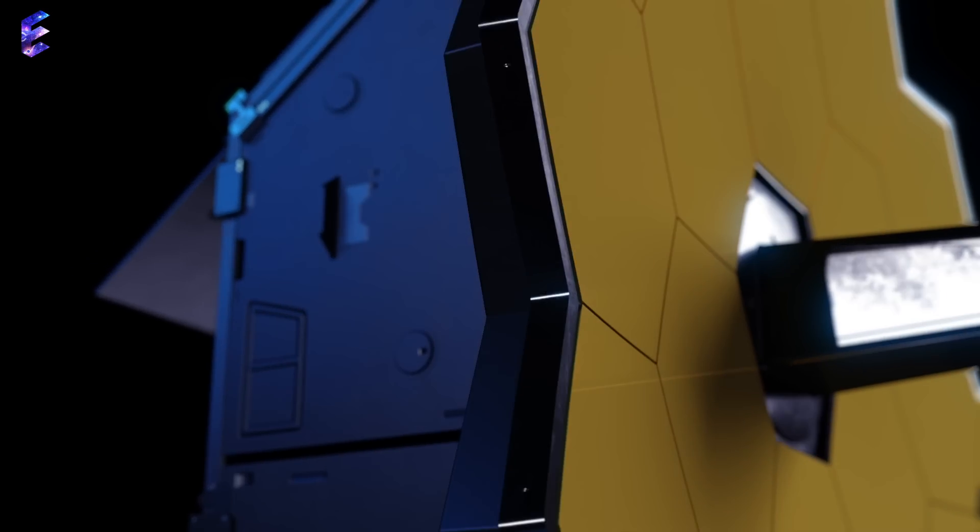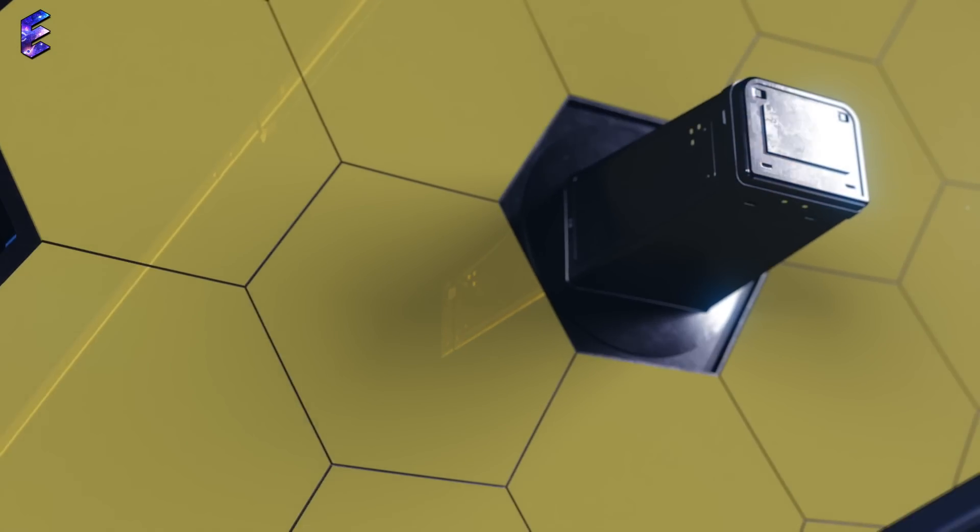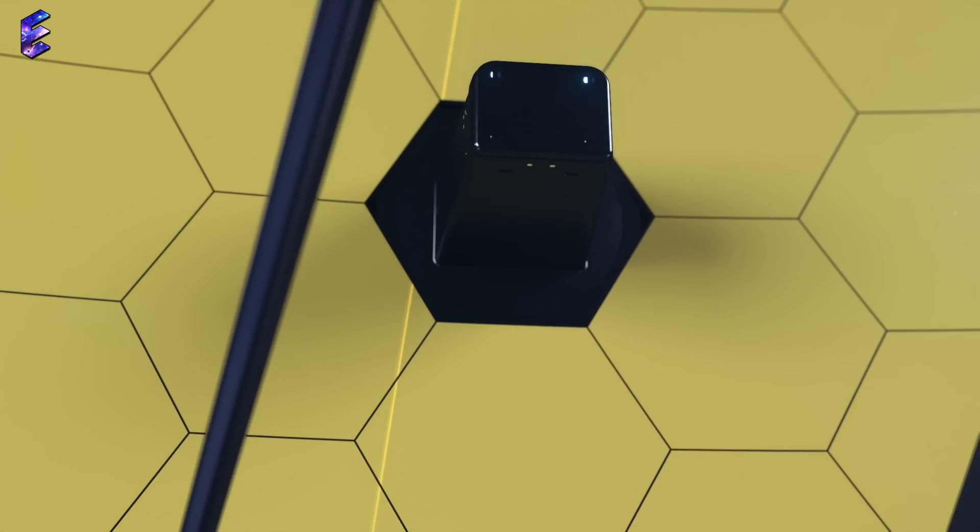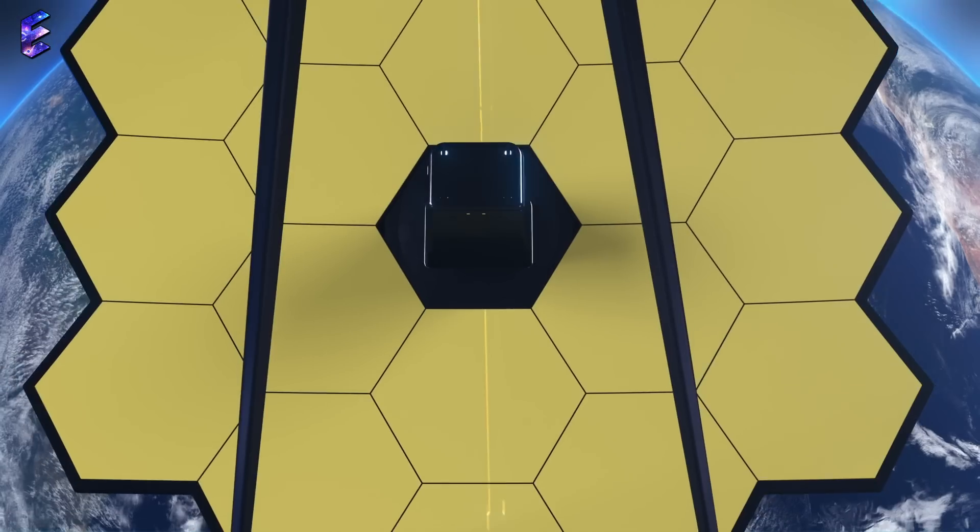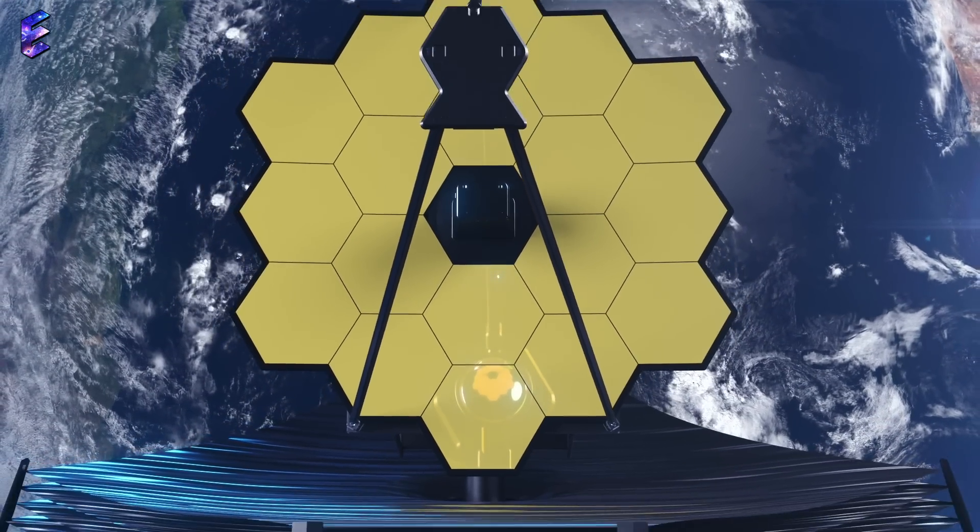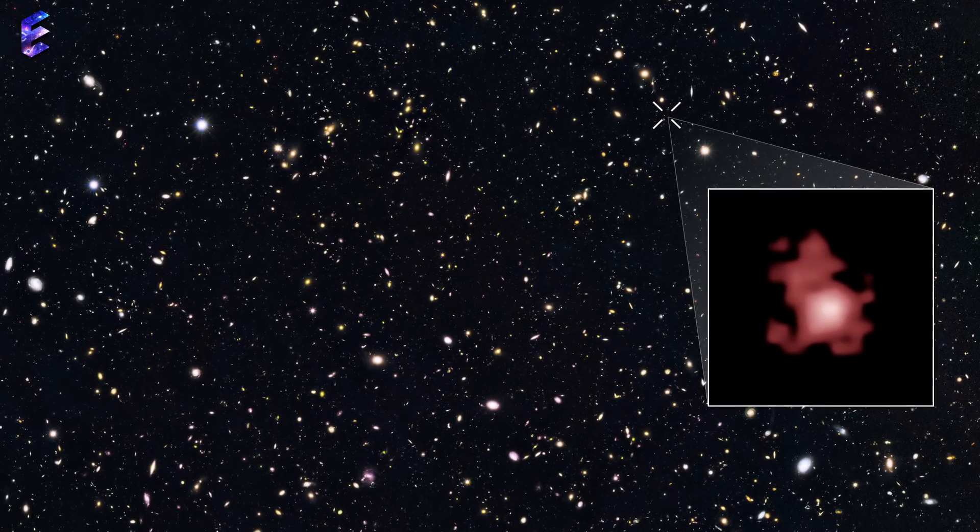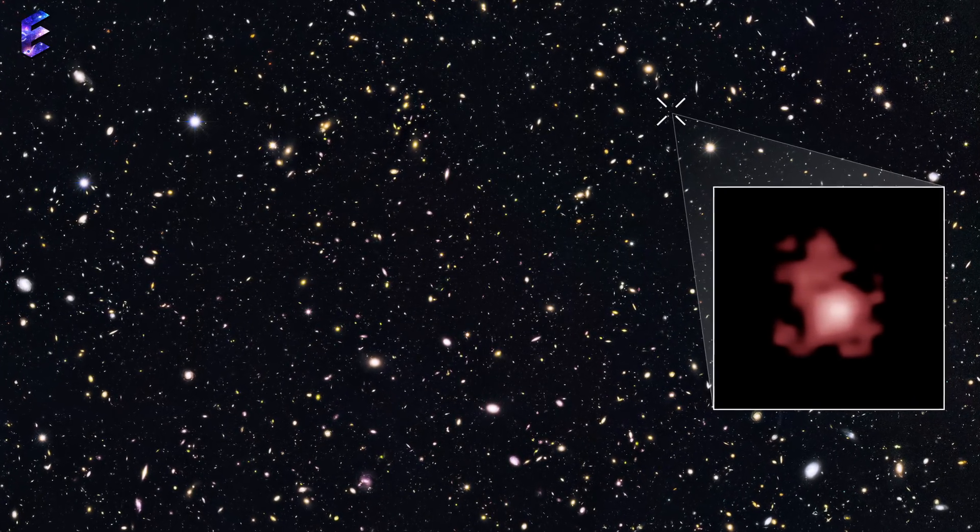They use the James Webb Space Telescope's infrared vision to look for globular clusters in their early phases. They use the telescope's incredible powers to peek into the furthest reaches of space and focus their attention on GNZ 11, one of the most ancient and farthest galaxies known to humanity.